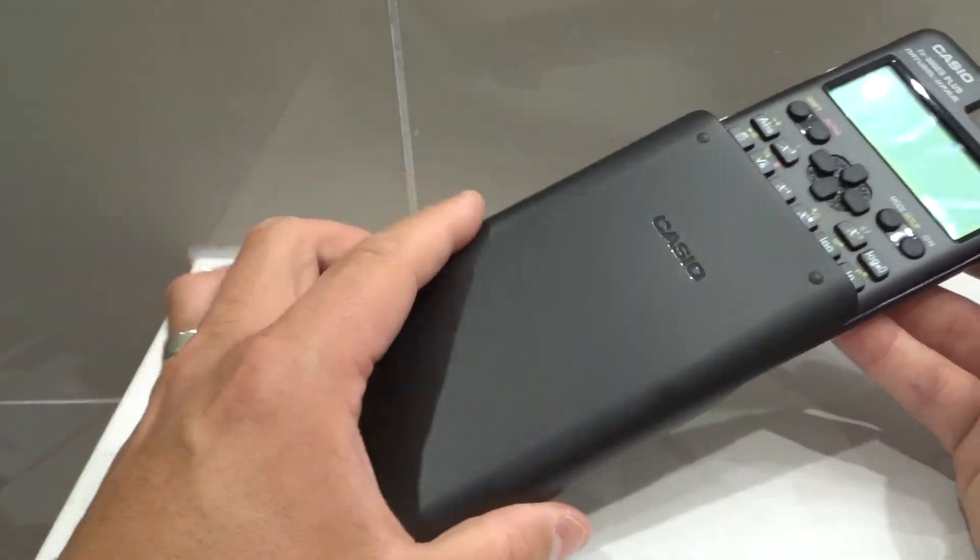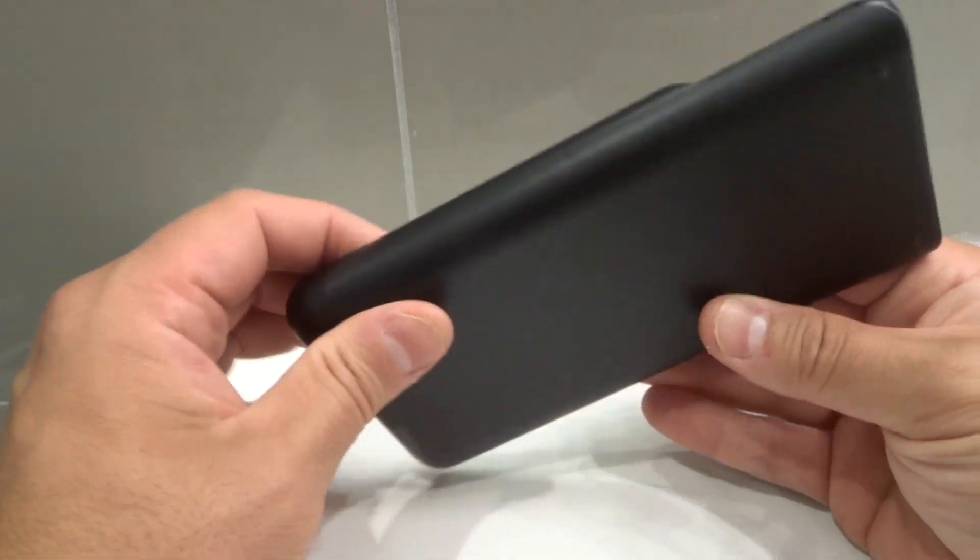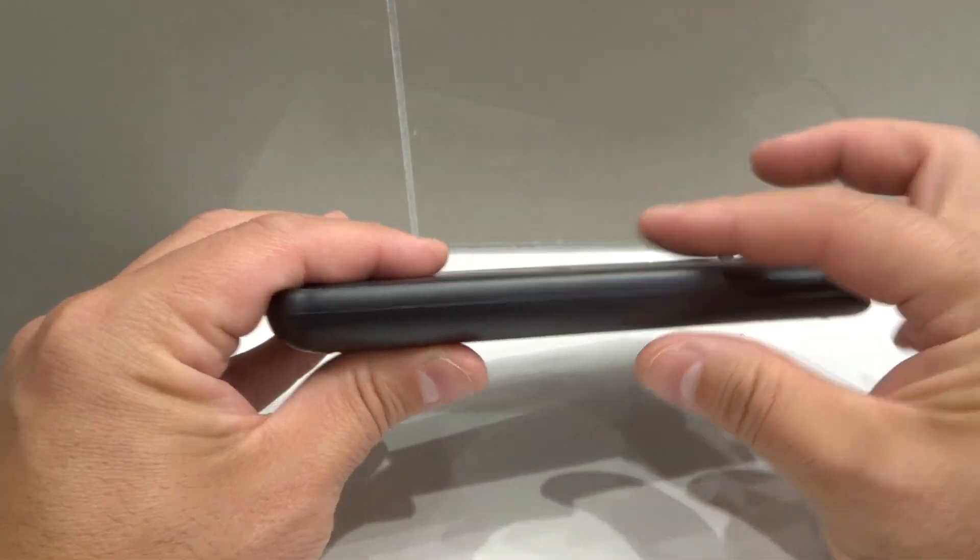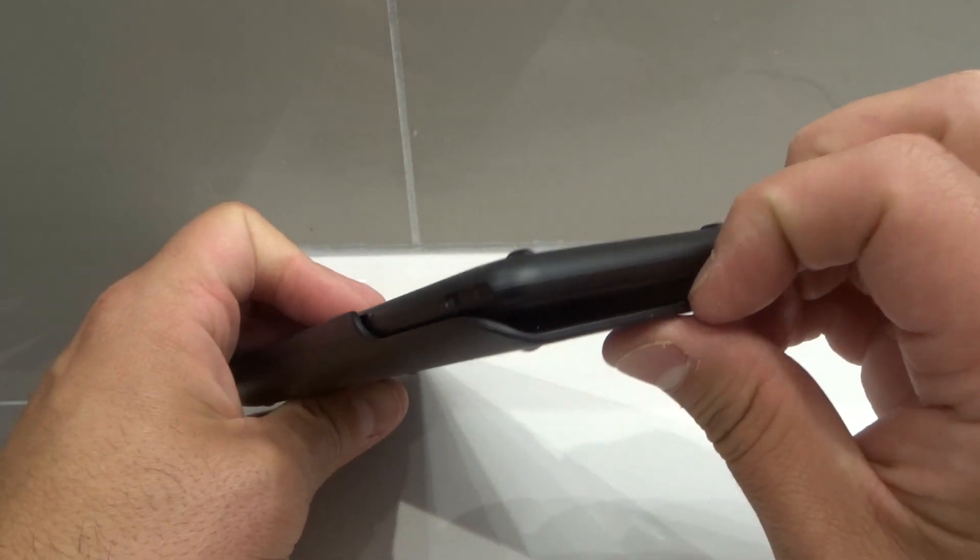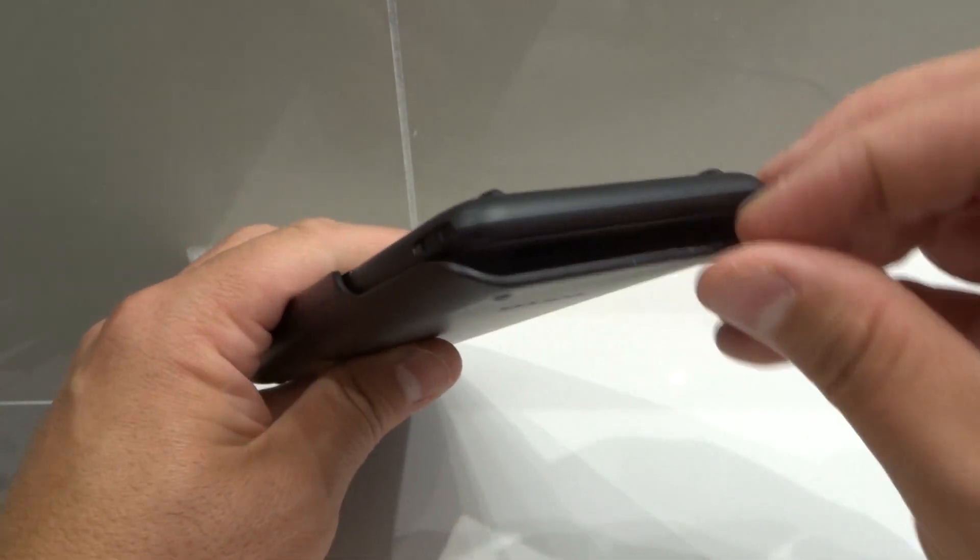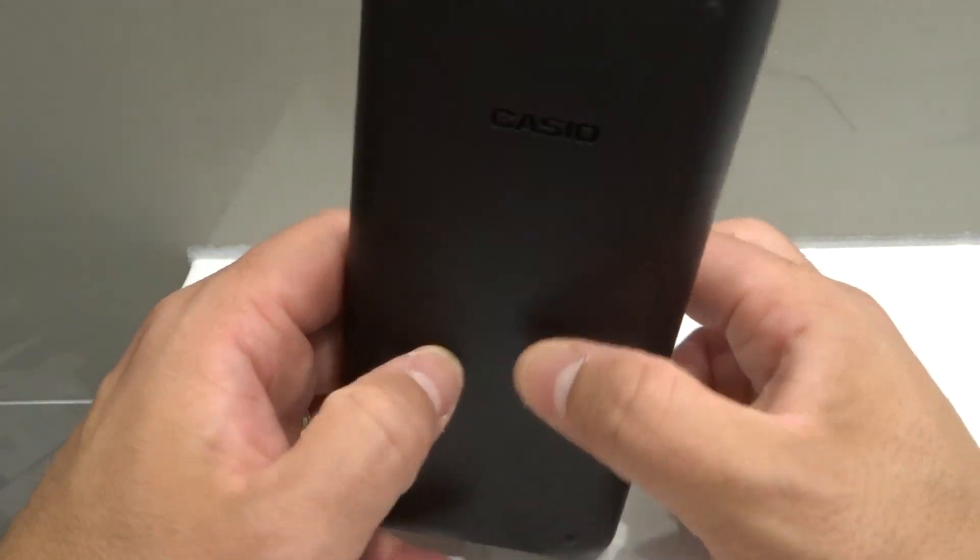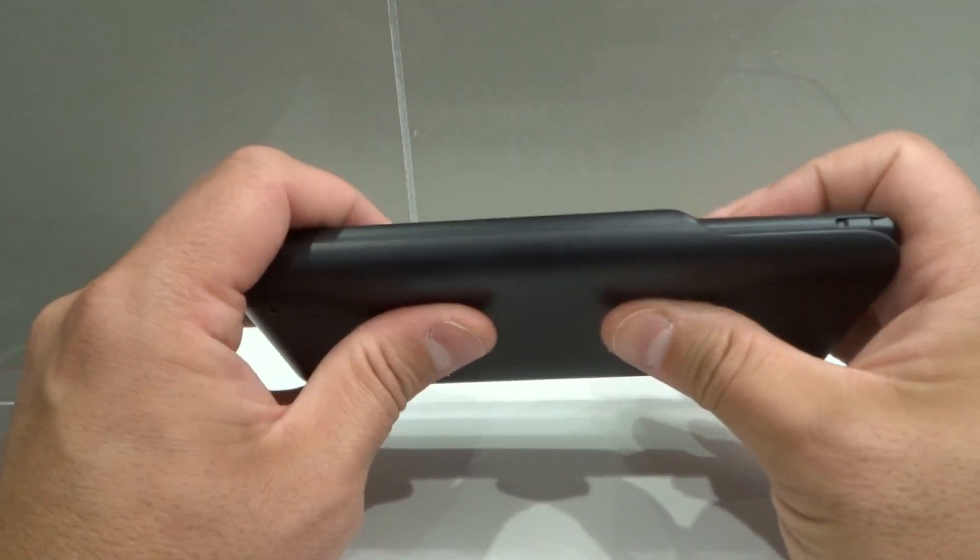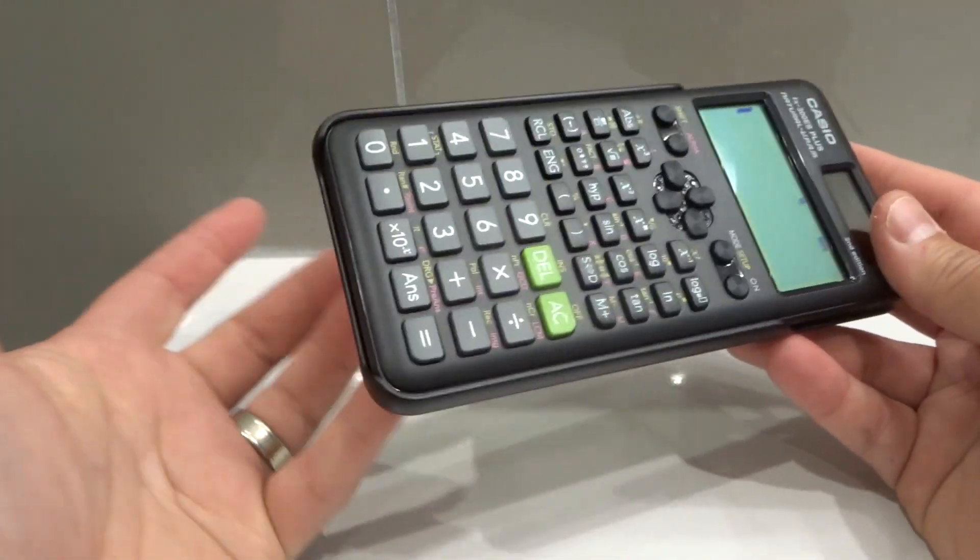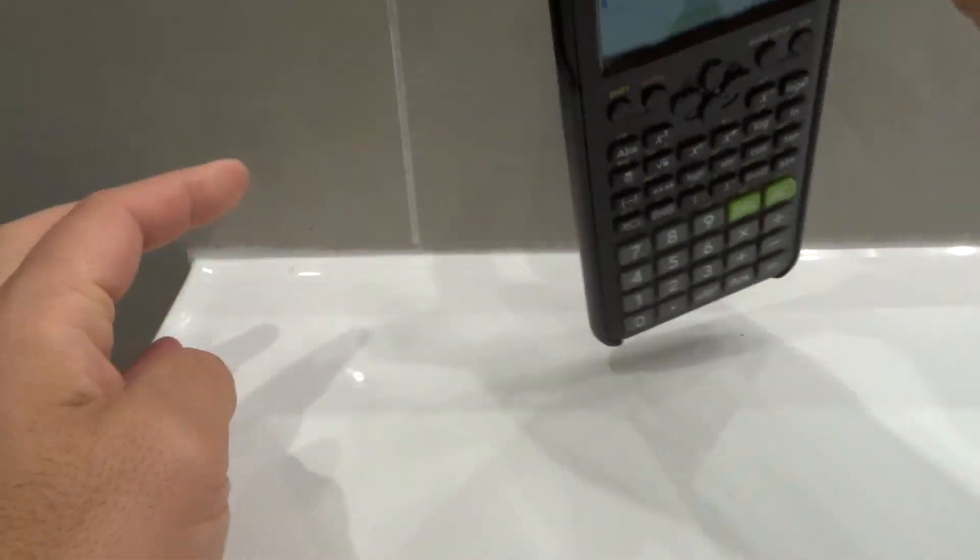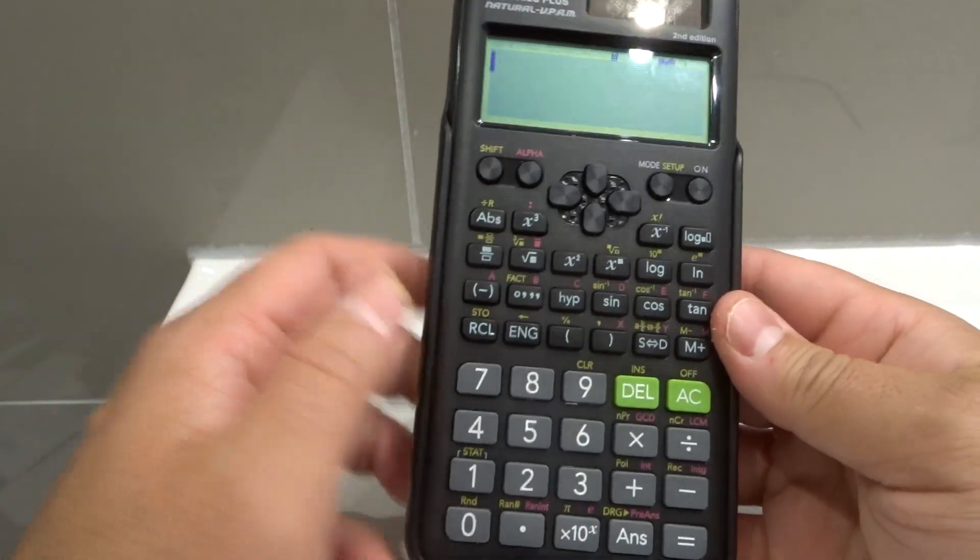It comes with this protective carrying case. Really nice, really sleek design. Look at the thickness with the carrying case. The carrying case doesn't really add any thickness which is good, and there is a slight gap here which is great because it's not going to be pressing buttons. If it was too close to the buttons it would be pressing the buttons, so that gap is good right there. When you are using it the carrying case slides and locks onto the back really securely. Absolutely fantastic design.